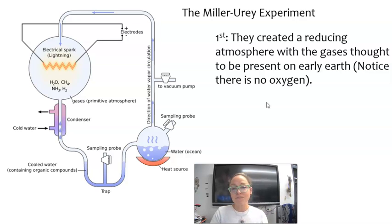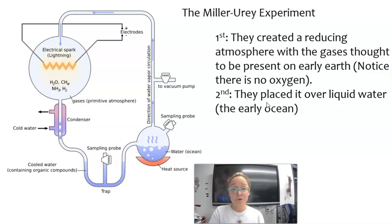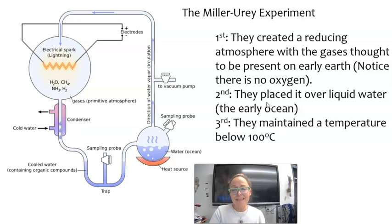The early Earth's atmosphere did not have oxygen present. Then they placed it over liquid water to represent the early ocean, and they maintained a temperature of around 100 degrees Celsius and tried to keep that pretty stable.